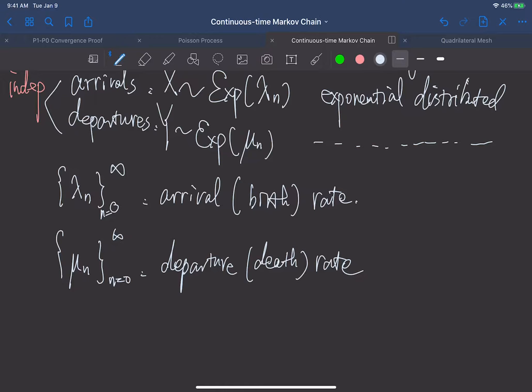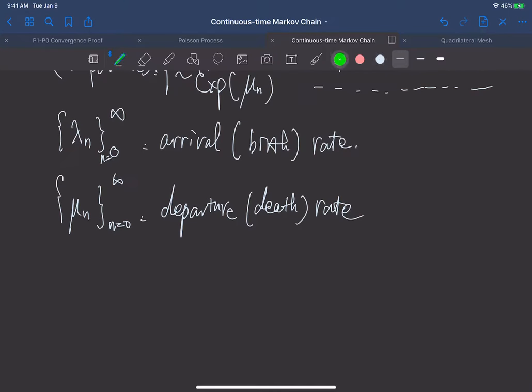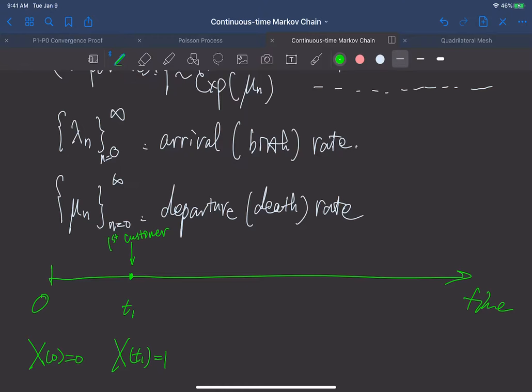What happens is, let me use this queue as this example, a typical birth and death process. Think about this is time. And when initially at 0, we have X(0) is 0. And after some time, let's say this time is t_1, is the first time this Markov chain changes state. And this becomes 1. Basically, this is like our first customer coming into, let's say, the line.